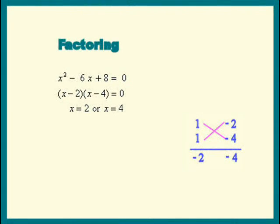x squared minus 6x plus 8 factors into x minus 2 times x minus 4, which gives us x is 2 or 4.